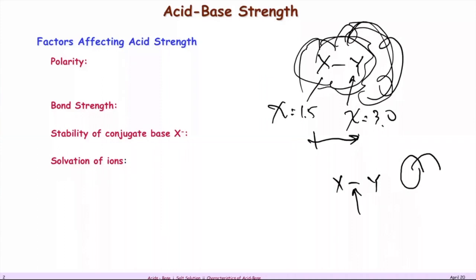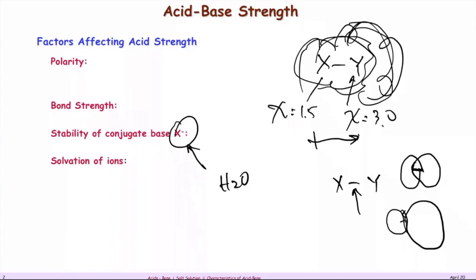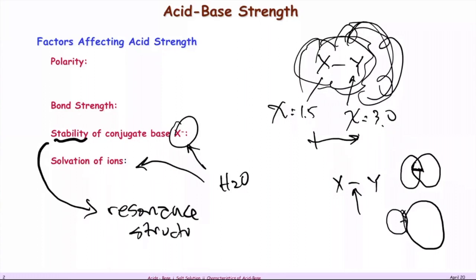Bond strength is really influenced by atomic orbital overlap. If there is good atomic orbital overlap, the bond strength is strong. But if the orbital overlap is insignificant because the atomic sizes are not compatible, that results in a weak bond. Solubility of the conjugate also matters — if the conjugate can be stabilized by water through solvation, the reaction is favored. The stability of the conjugate involves resonance structure.